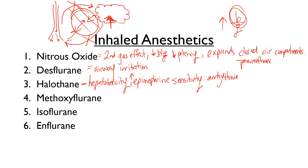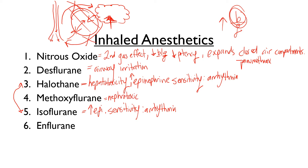Isoflurane doesn't have the hepatotoxicity issue that halothane does, but it does share the increased epinephrine sensitivity, which can also lead to arrhythmia. So both isoflurane and halothane have epinephrine sensitivity. Methoxyflurane is extremely nephrotoxic — avoid it. Enflurane is also nephrotoxic due to its metabolic breakdown product: fluoride ions.